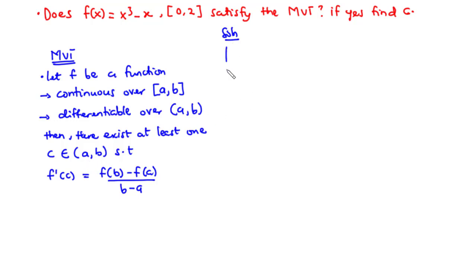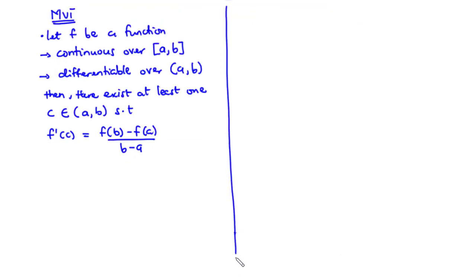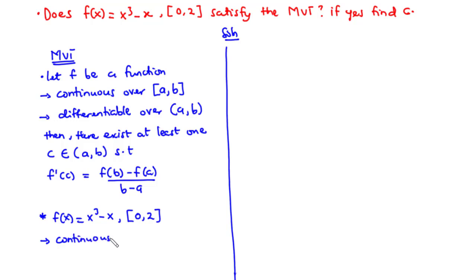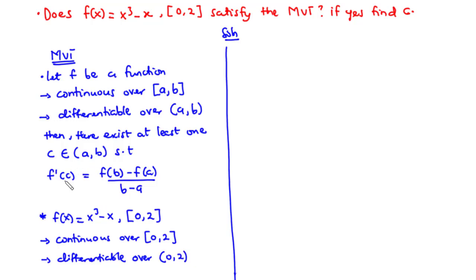We have the function f of X equals X cubed minus X over the closed interval 0, 2. This function is a polynomial function, so it is continuous over this closed interval and differentiable over the open interval 0, 2. Next, let's find the value of C in this open interval.